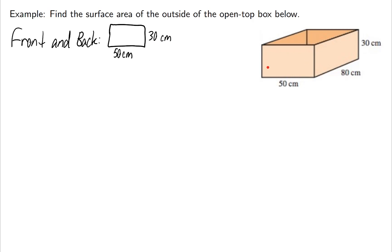That represents this part of the figure and this sort of hidden part of the figure in the back. So what this will contribute is two faces that are 50 centimeters by 30 centimeters and we get 3,000 centimeters squared.